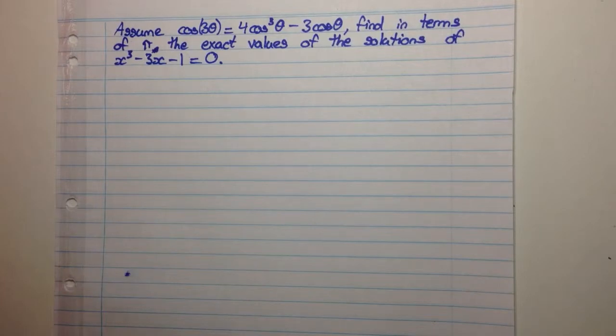Find in terms of pi the exact values of the solutions of x³ minus 3x minus 1 equals 0.